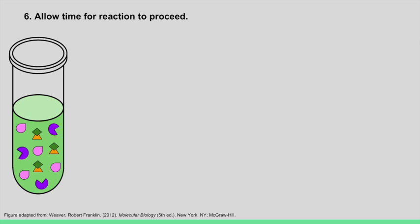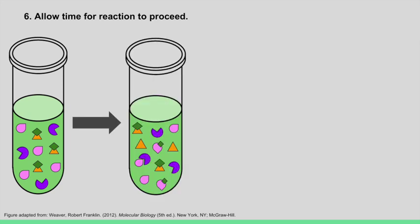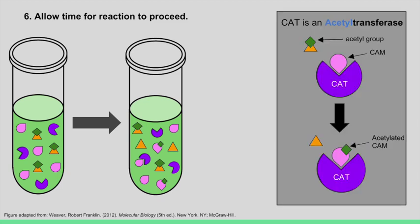The next step is to wait for the reaction to occur. Within the protein mixture are many molecules of the CAT enzyme. As previously mentioned, CAT is an acetyltransferase, meaning it will take the acetyl group from the acetyl-CoA provided and transfer it to CAM.